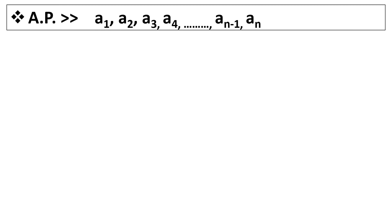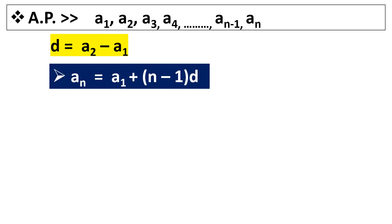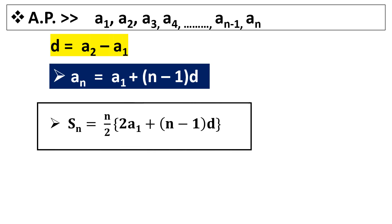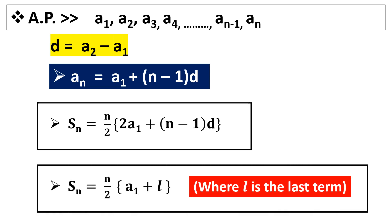First let us recapitulate. For an AP whose terms are a1, a2, a3 up to an, the common difference D can be found by subtracting the previous term from the successive term, so D equals a2 minus a1. The nth term formula is an = a1 + (n-1)×D, and the sum of n terms is Sn = (n/2) × [2a1 + (n-1)×D], or if we know the last term, Sn = (n/2) × (a1 + L). We will use these formulae to solve the questions.